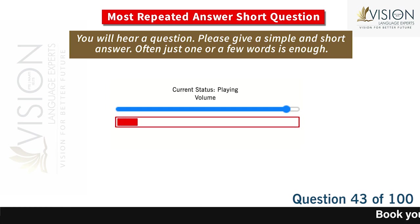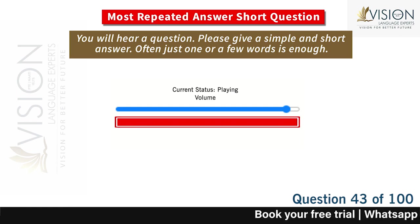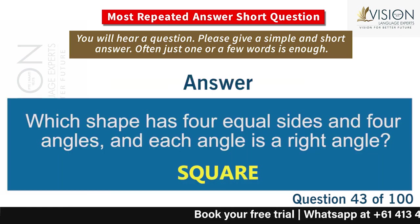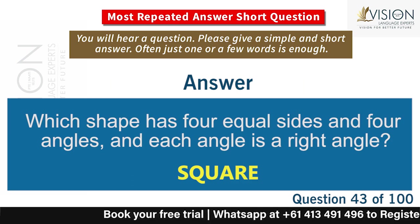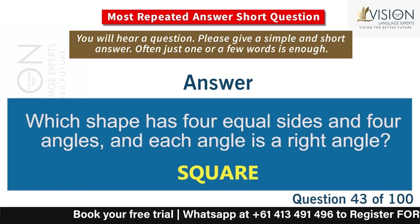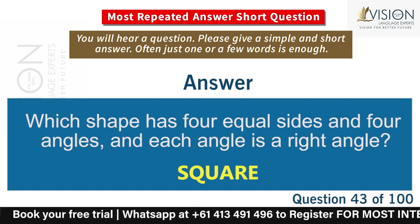Which shape has four equal sides and four angles, and each angle is a right angle? Square.